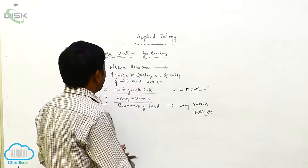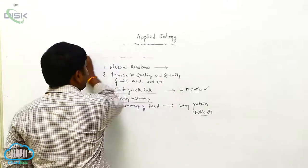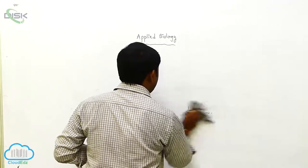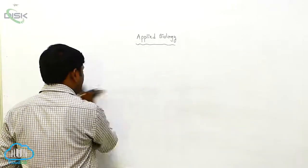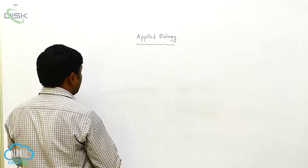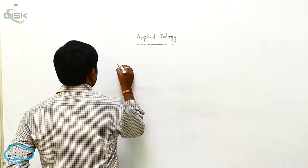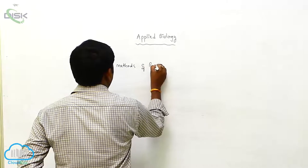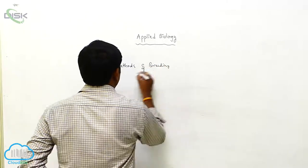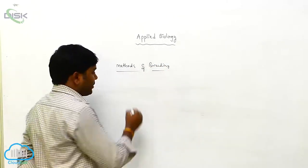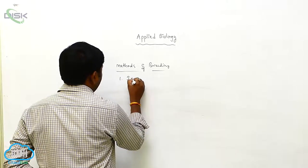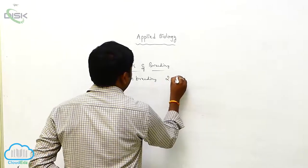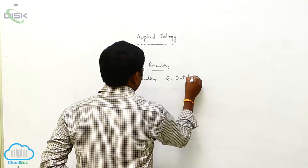These are the desirable qualities of breeding. Now the methods of breeding: the first one is inbreeding and the second one is outbreeding.